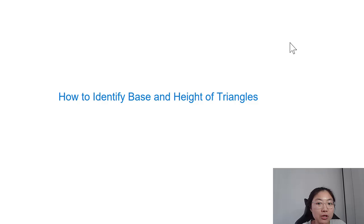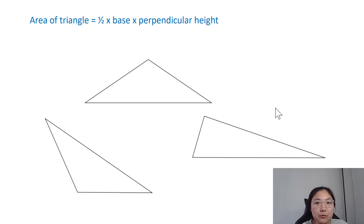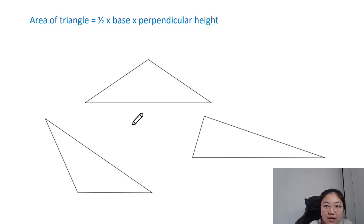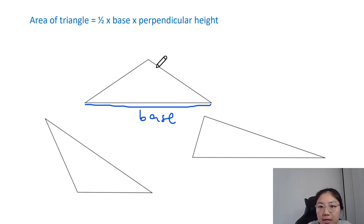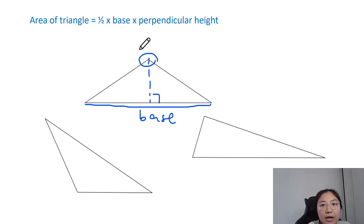Without this ability to identify the base and the corresponding height of triangles, your child might not be able to solve all types of questions involving area of triangles. Let me show you three types of triangles. The first one is very simple — most students can tell that the line below is the base, and the corresponding perpendicular height is the line that is 90 degrees to the base.